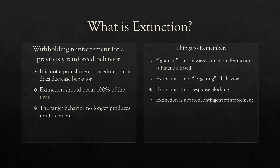If you're going to do extinction, it must occur 100% of the time or as close as possible. 100% of the time is unrealistic in most cases, but you need to get to 97, 98, or 99% of the time if you really want extinction to be truly effective. The target behavior no longer produces reinforcement — a behavior that used to receive something or get rid of something now no longer gains or removes that thing.